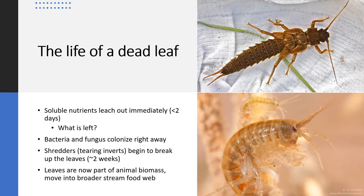Let's get into the life of a dead leaf. The two organisms pictured are very common consumers of leaf material. The one in the top right is what we call a giant stonefly — these are quite large, found in very high quality streams, and they love leaves. They nibble on them all day long and are on the order of a few inches long. Now, if you're a leaf and you fall into the water, soluble nutrients are going to leach out almost immediately — within just a couple of days.